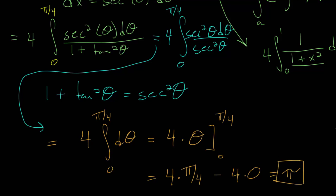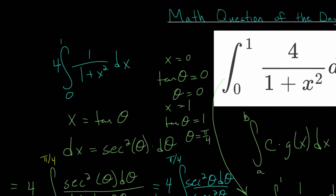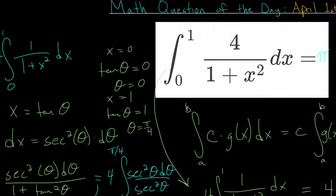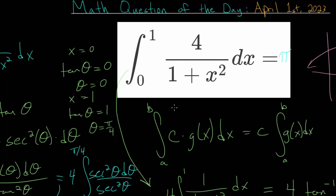The area underneath this curve between x values of 0 and 1 and the x-axis is equal to pi.